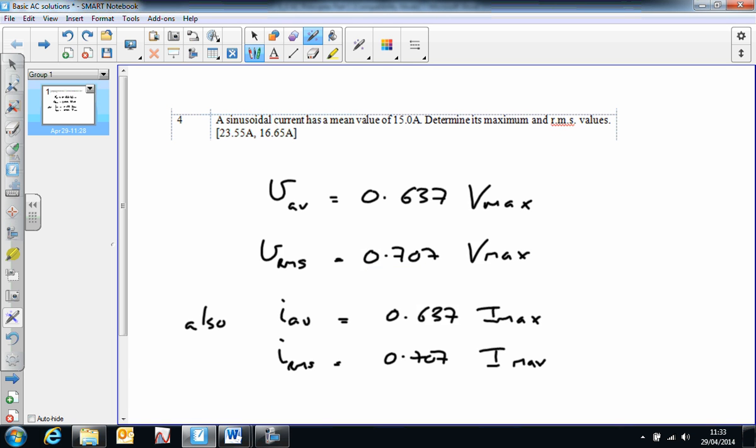So determine the maximum value, but if you know that the mean value is 23.55 amps, then divide that by 0.637 to get I max.